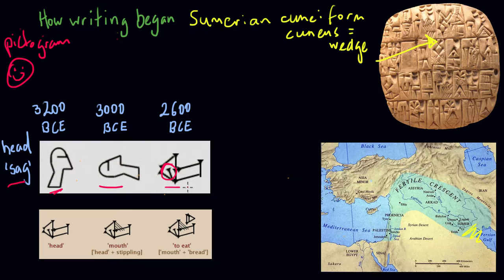So what we have at this point are what we call logograms. And by that, we simply mean a symbol that still represents a whole word, but no longer does it by pictorial resemblance.